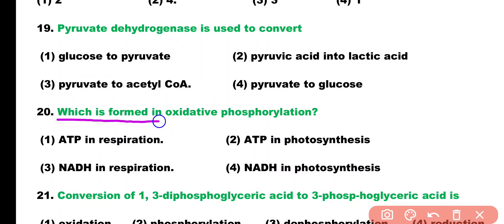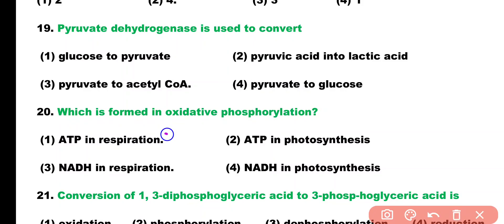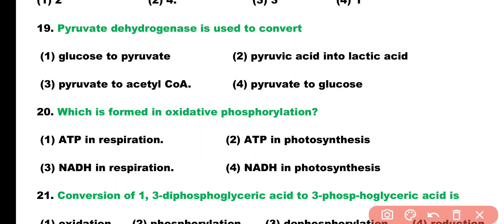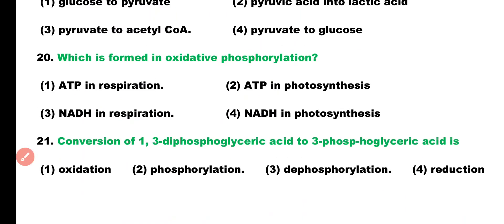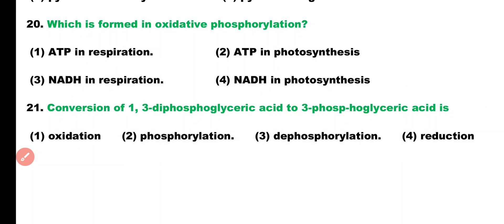Question number 20. Which is formed in oxidative phosphorylation? ATP in respiration, ATP in photosynthesis, NADH in respiration, or NADH in photosynthesis. Correct answer is option 1. In oxidative phosphorylation, ATP is formed during respiration.